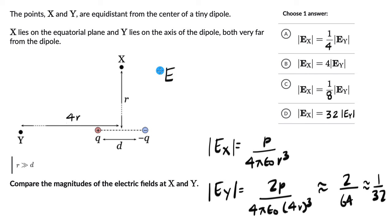So the magnitude of EX divided by 32 equals the magnitude of EY. Because EX is P divided by 4πε₀r³, when you divide this by 32, you get the electric field at point Y.